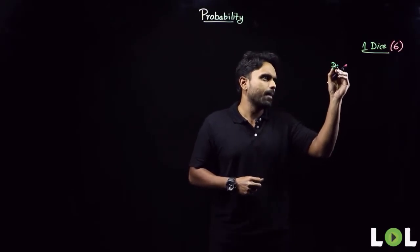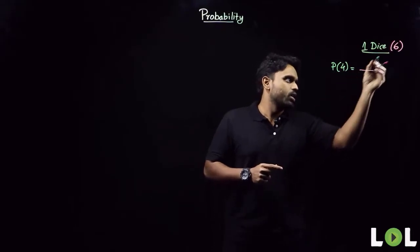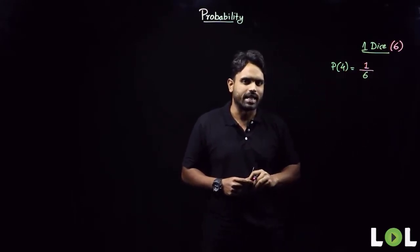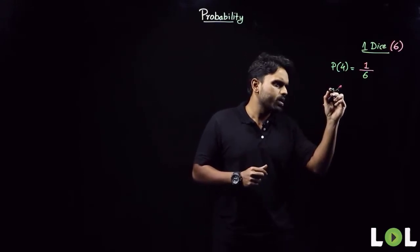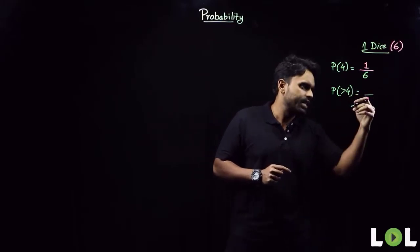Let's reinforce our approach for probability questions. When you roll a die, how many outcomes are possible? Six — you can get 1, 2, 3, 4, 5, or 6. Probability is defined as number of favorable cases upon total number of cases. We always start from the denominator. For probability of getting a 4: total cases is 6, favorable case is 1, giving 1/6.